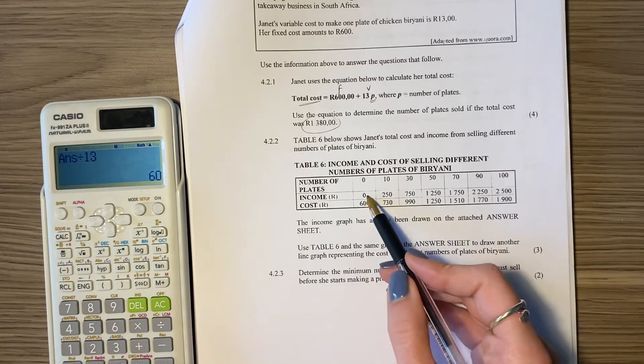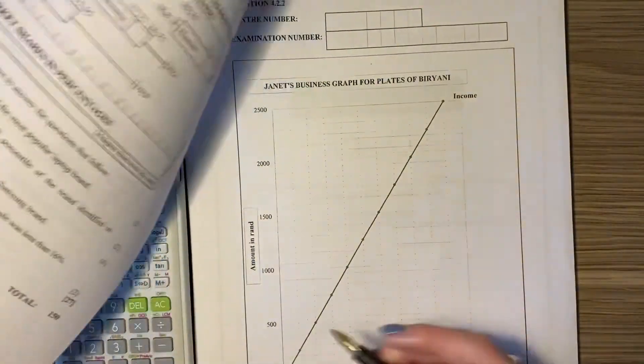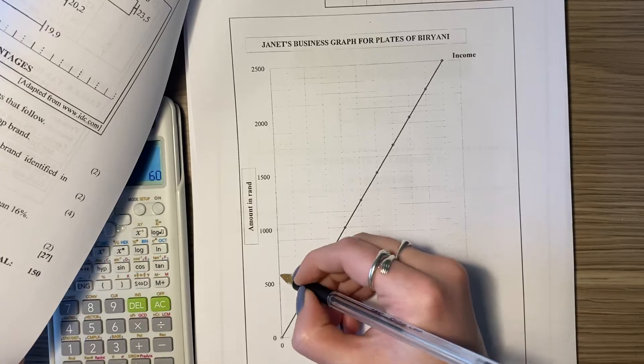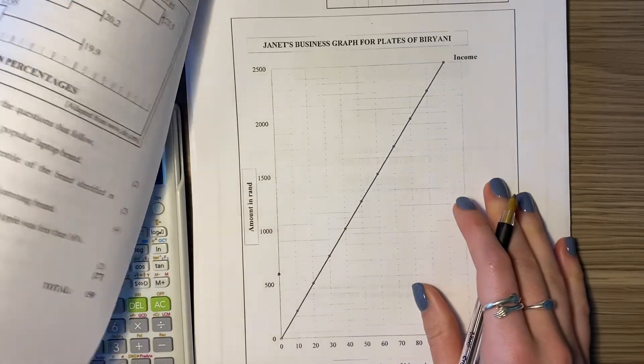At zero it is 600. So at zero I'm going to show you there. At zero we're sort of sitting over there, because we have a fixed cost. So even if she sells nothing she has a cost.